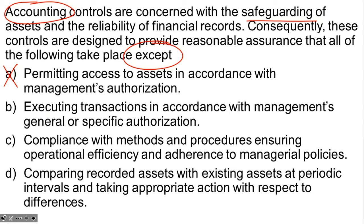Choice B: executing transactions in accordance with management's general or specific authorization. Executing transactions is really what accounting does, so this is clearly within the scope of accounting controls. Choice C: compliance with methods and procedures, ensuring operational efficiency and adherence to managerial policies — controls certainly do this.